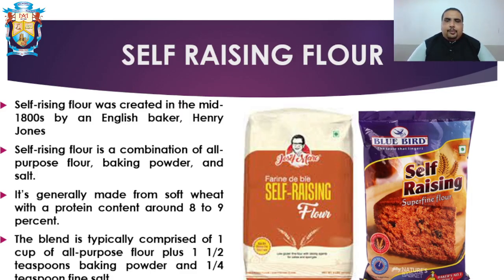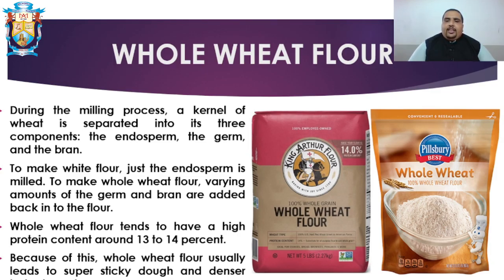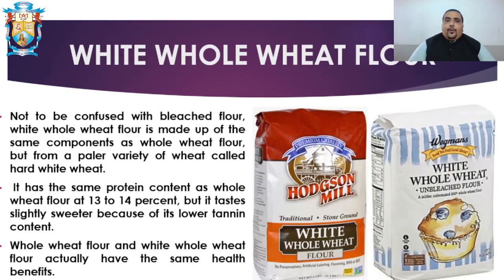Next is whole wheat flour, which is what we use in India on a regular basis. During milling, the kernel of wheat is separated into three components: the endosperm, the germ, and the bran. To make white flour, just the endosperm is milled. To make whole wheat flour, varying amounts of germ and bran are added back in — milled separately and then reincorporated. Whole wheat flour tends to have a high protein content of around 13 to 14 percent, leading to super sticky dough and denser baked goods.